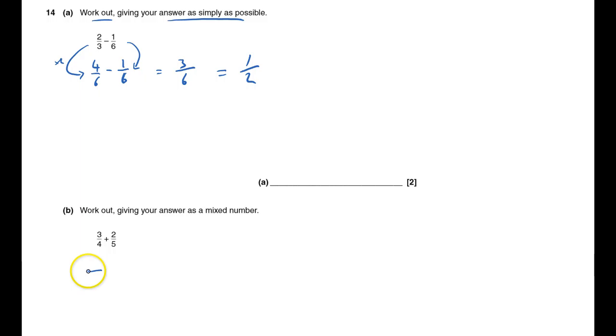That's quite nice because I have actually cancelled it down, so I reckon I'm right. Work out this, giving your answer as a mixed number—that's a number like one and a half. One denominator is four, the other one's five, so I need to make both denominators 20.